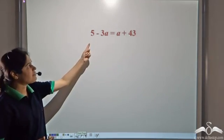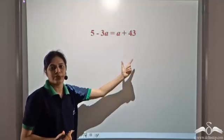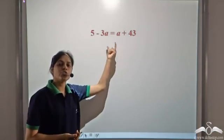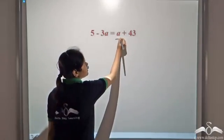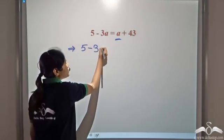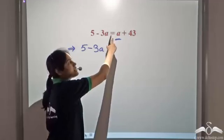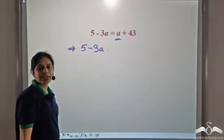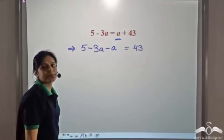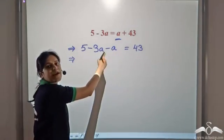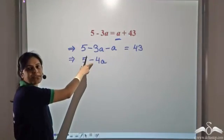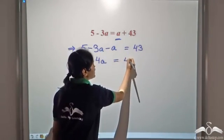Can you solve this equation? 5 minus 3a is equal to a plus 43. We need to have variables on one side and constants on the other. So we transpose a from the right hand side to the left hand side — plus a becomes negative a. So we have 5 minus 3a minus a on the left hand side equals 43 on the right. Collecting variable terms: negative 3a minus a gives negative 4a. So on the left hand side we have 5 minus 4a, and on the right hand side we have 43.